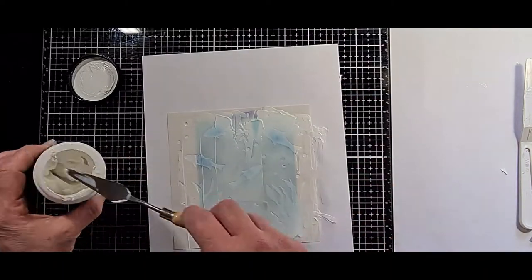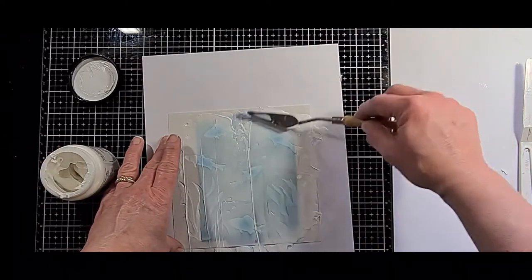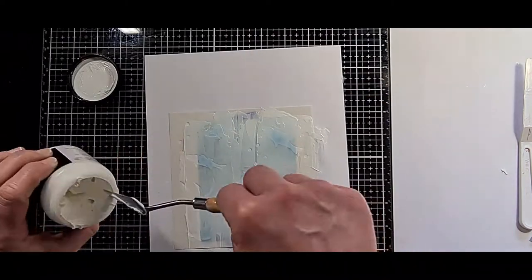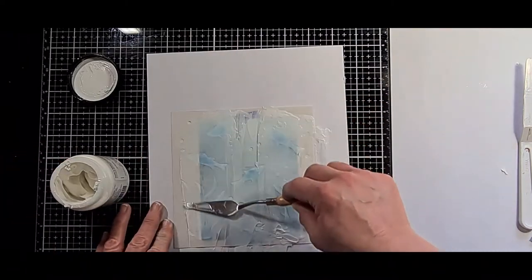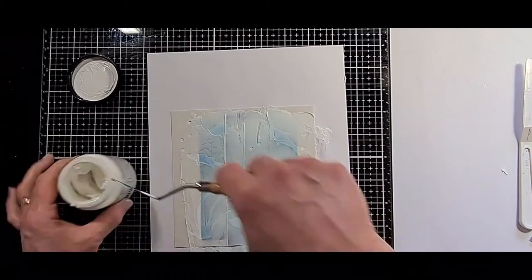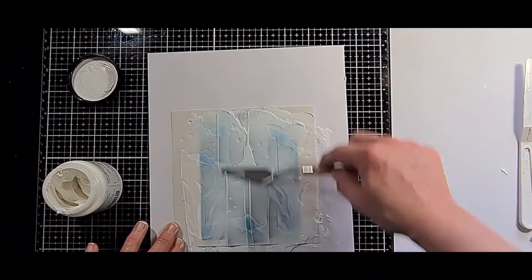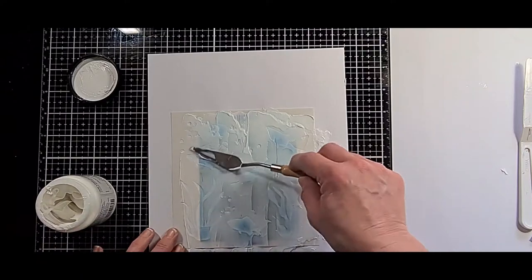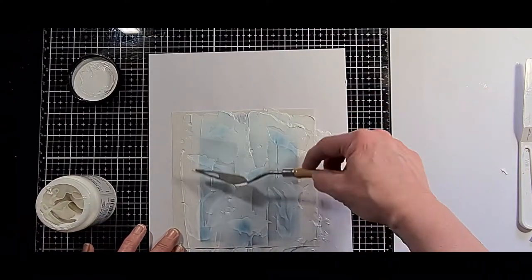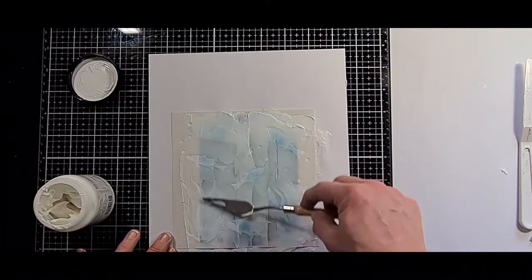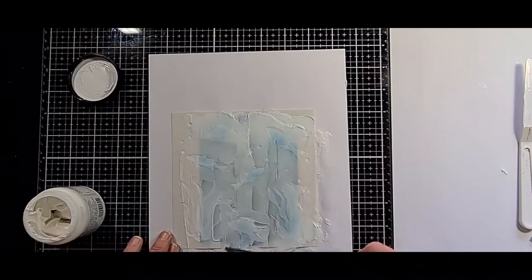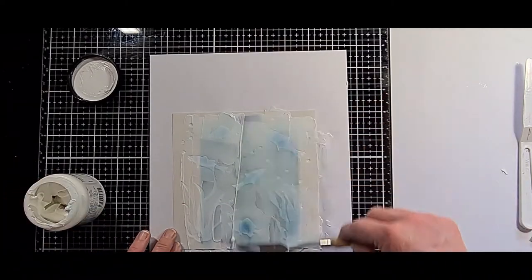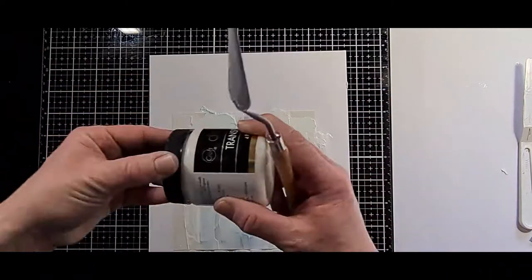Now, I do have a pan of water off to the side that I put all my stencils in immediately after I was done with them to make cleanup of them a lot easier. Because if you let the transfer gel dry on your stencil, it is very hard to get it off. So with a pan of water, it just keeps the transfer gel nice and wet. So it makes cleanup a lot easier.